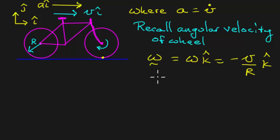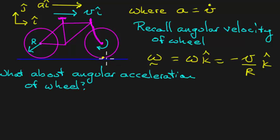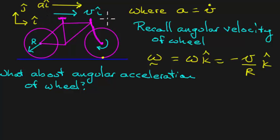Now we want to think about the angular acceleration of the wheel. The wheel is rotating with an angular velocity that matches the bike's velocity, but the bike's speed is changing. If a is positive, the bike is going faster and faster, and you might expect the wheel to start spinning faster and faster too. So let's look at that angular acceleration.